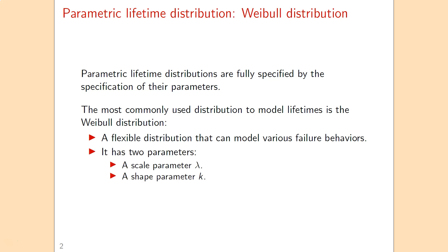The Weibull distribution has two parameters: a scale parameter that we will indicate by lambda, and a shape parameter that we will denote by k.